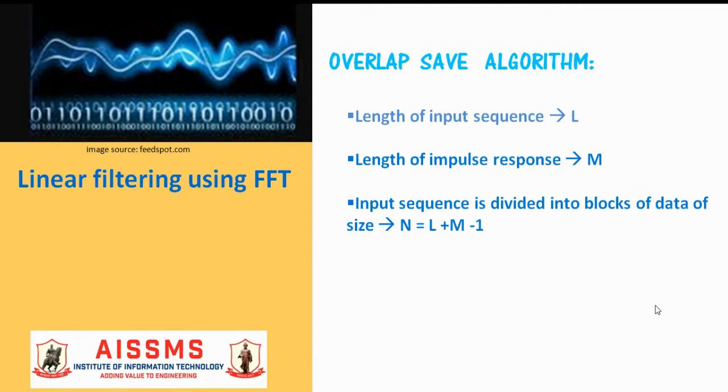The next algorithm: overlap and save algorithm. The long input data sequence is broken into blocks of size L. M represents the length of the impulse response. Each of the subsequence of the long input sequence is divided into blocks of size N, which is equal to L plus M minus 1.